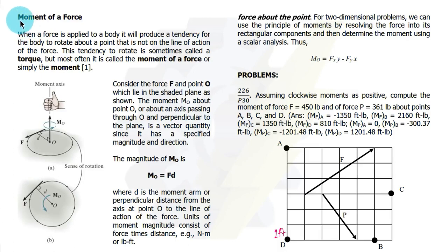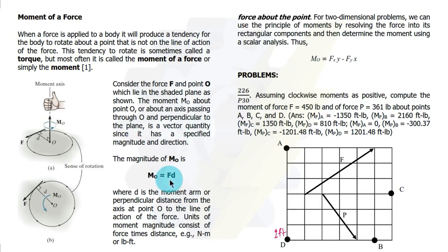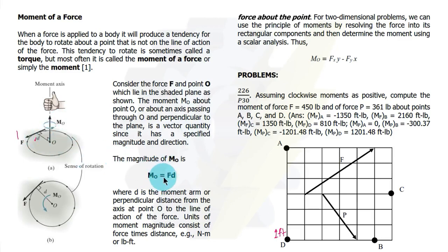Our next topic is about moment of a force. Moment is simply the tendency of a body to rotate. The basic formula is: moment is equal to force multiplied by its moment arm. For example, we have force F and its moment arm — the distance from the moment axis point O — so the moment is designated M sub O. The formula to solve the moment is force times distance, or the moment arm.